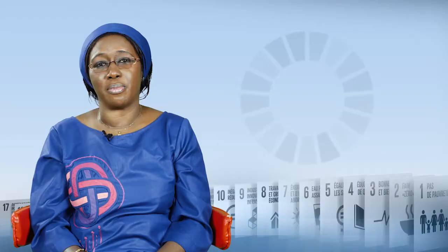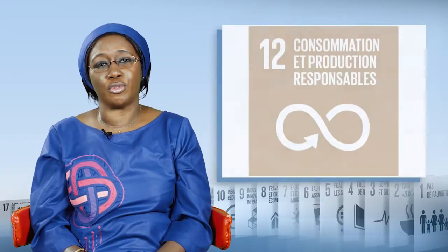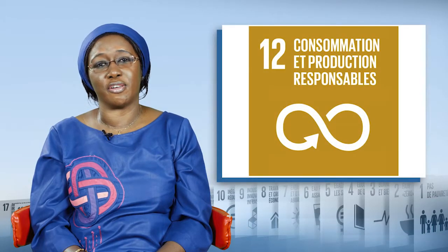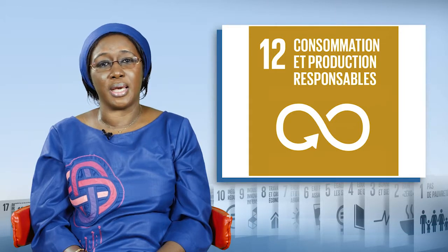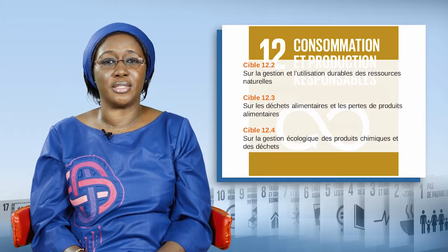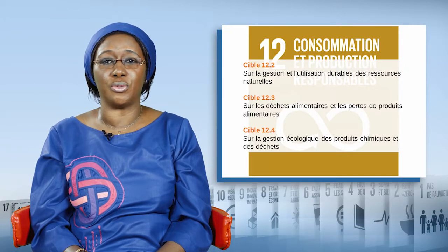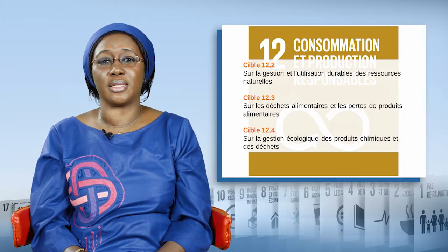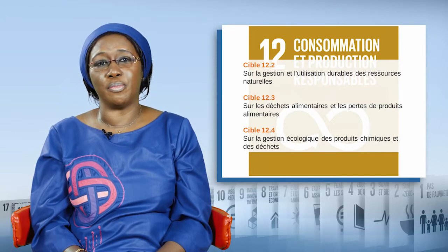Goal number 12 from the SDGs, the Sustainable Development Goals proposed by the General Assembly of the United Nations, aims at instituting consumption and production modes that are sustainable. We're going to look at the interactions between the SDGs and the other goals for sustainable development by looking at three targets: 12.2, 12.3, and 12.4, and I will provide a few concrete examples.